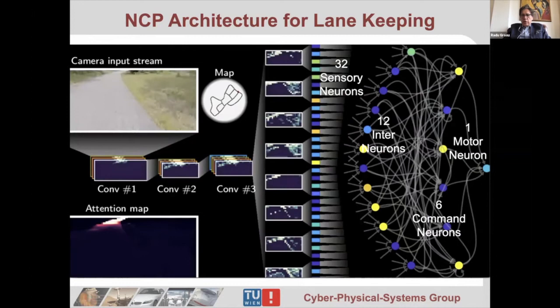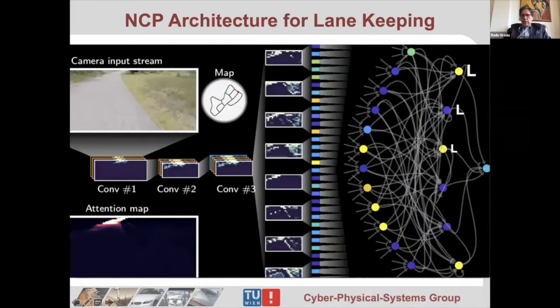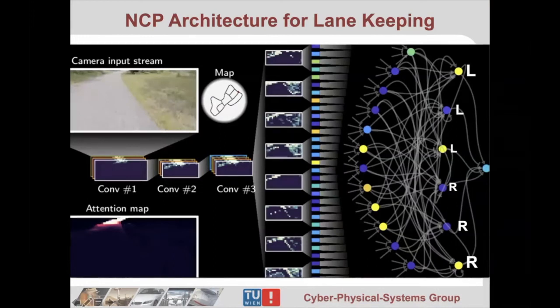This interconnection between the neurons is learned—all the synapses and their strengths have to be learned. What is nice about this is that we have only 19 neurons explaining the lane keeping. For example, this one says turn left, turn stronger left, and turn very strong left. The other ones say turn right, turn stronger right, and turn very strong right. When all of them are disabled, you go straight. These neurons are mutually exclusive, so if you turn left, you don't turn right at the same time.